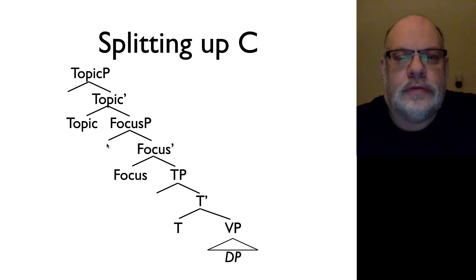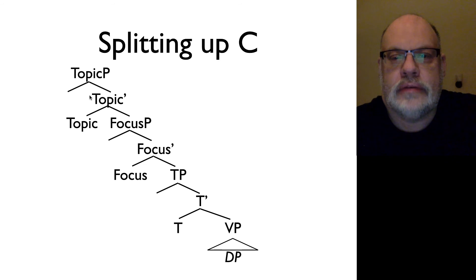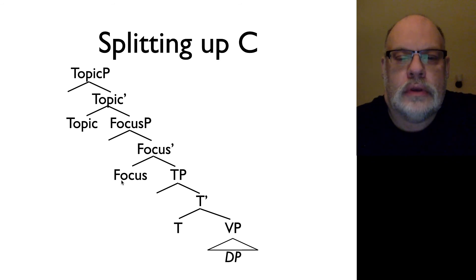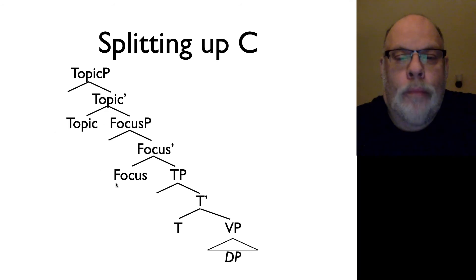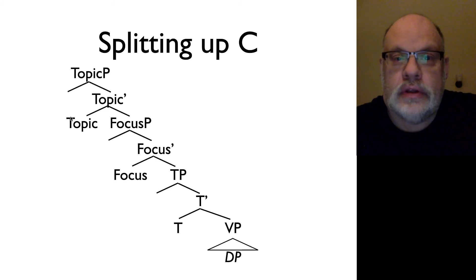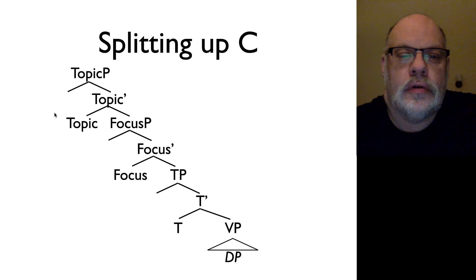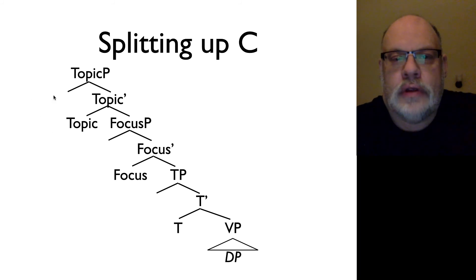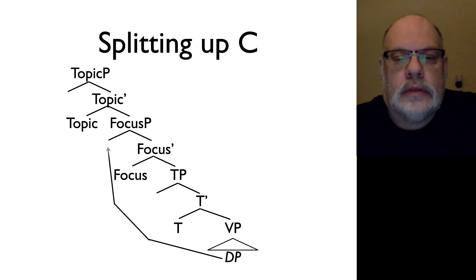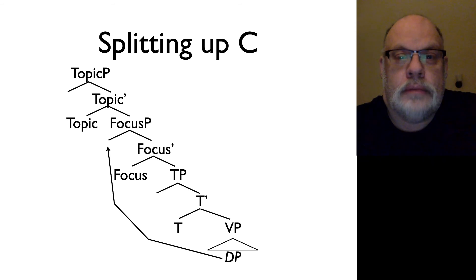One possible explanation for this is that instead of having complementizers, we actually have a very complex system which includes complementizer-like heads that represent discourse information. So we have a focus phrase, and that is the position of new information. And we have the topic phrase, and that's the position of old information. And DPs can end up in either position — in this focus position or in this topic position — and that will result in varying word orders. So this is a standard analysis of languages with scrambling.